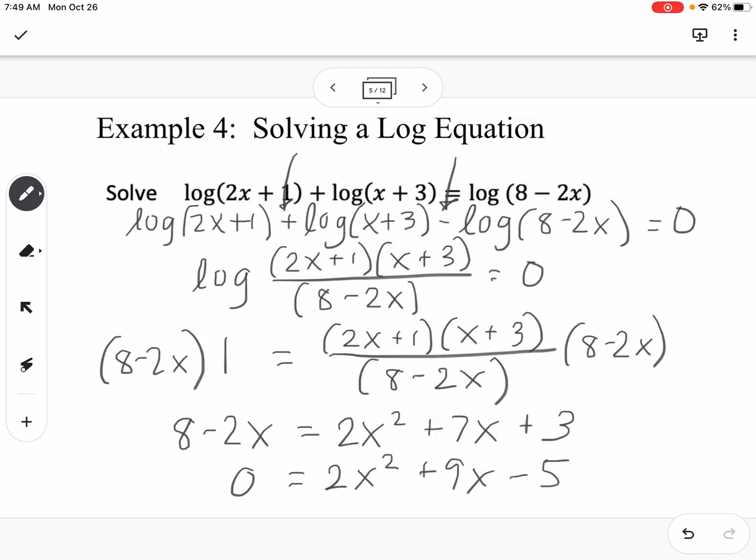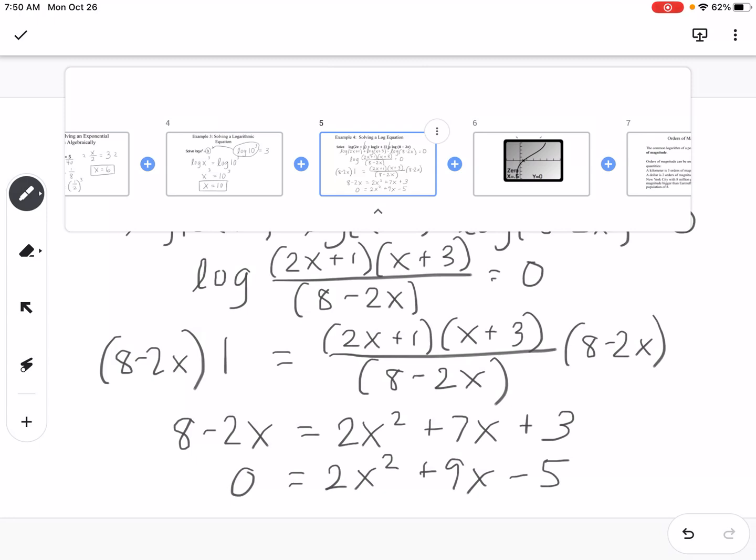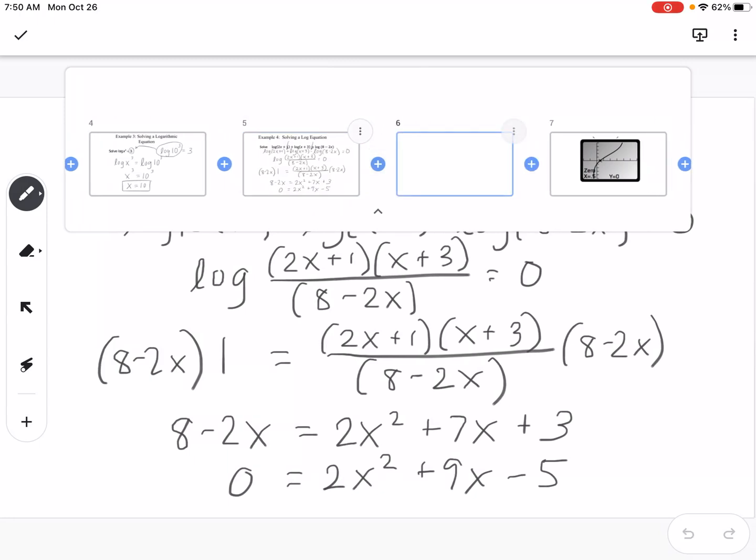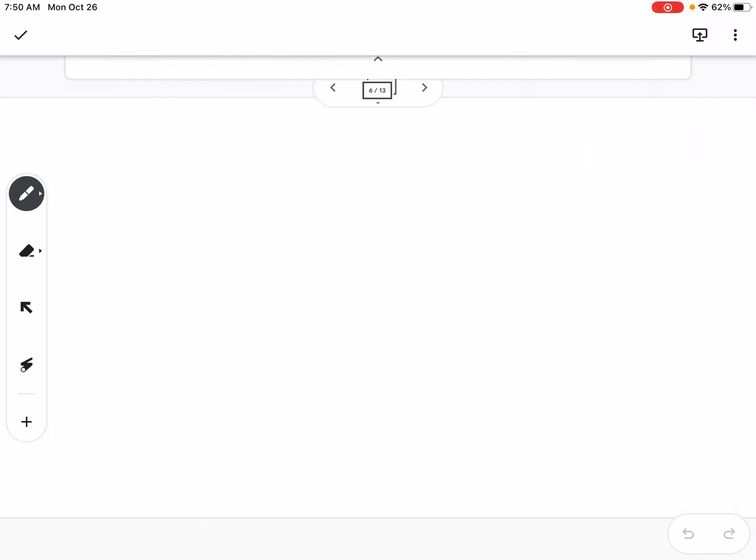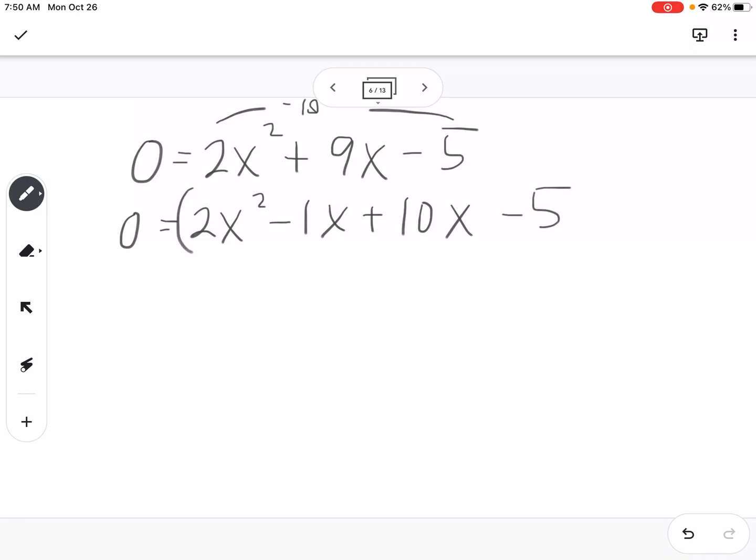We can factor this. I have 2x squared plus 9x minus 5, so we can say what multiplies to negative 10 and adds to 9, so that would be 2x squared minus 1x plus 10x minus 5. We can group.